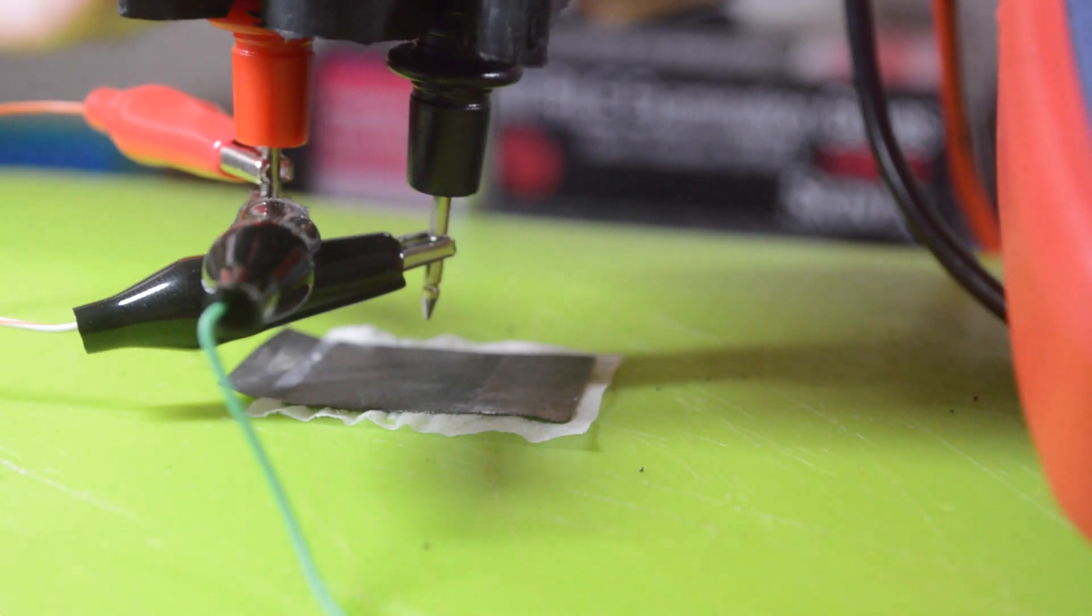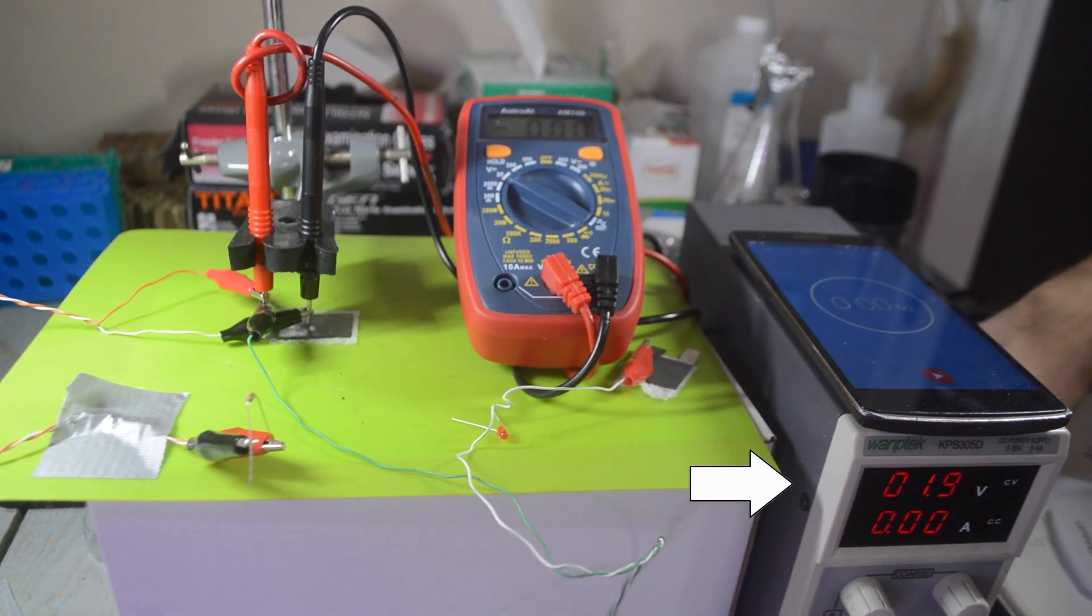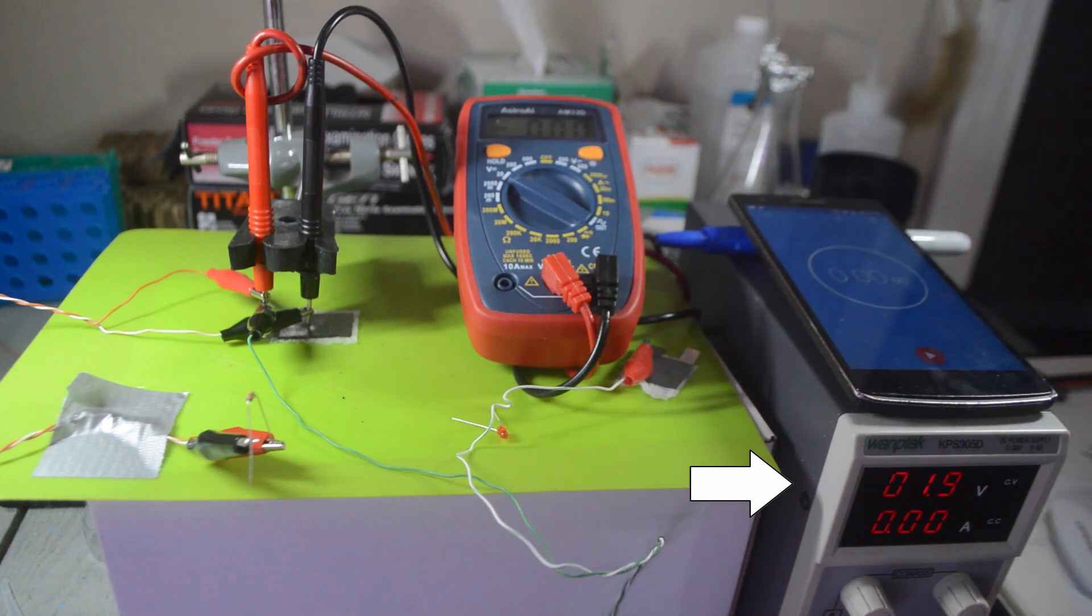To test our little supercapacitors we're going to need a few things. The first is a variable power supply. If you're going to be working on supercapacitors, these are absolutely necessary. Then we'll need a multimeter, an LED, a 100 to 1000 ohm resistor, and a timer.